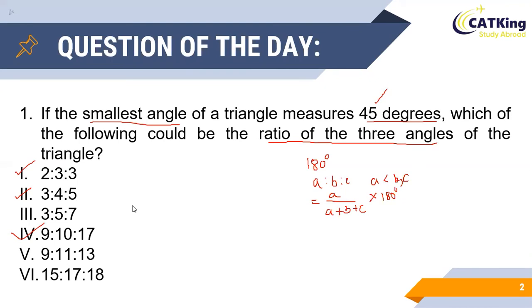For example, in option 1, the smallest angle will be 2 divided by (2 + 3 + 3), that is 8, times 180, which is equal to 45 degrees. Hence option 1 is correct.